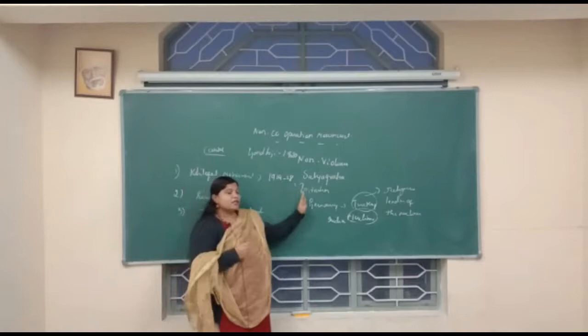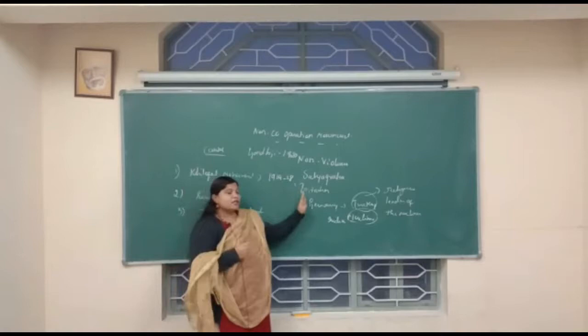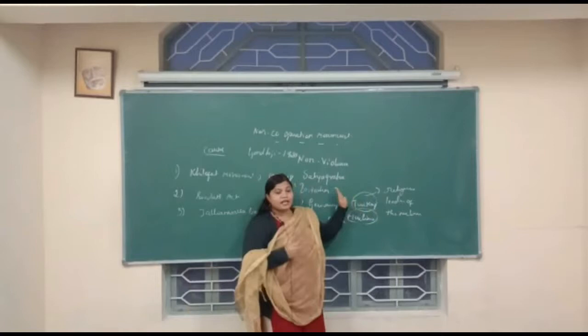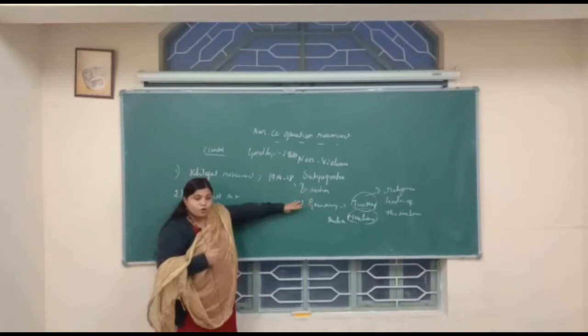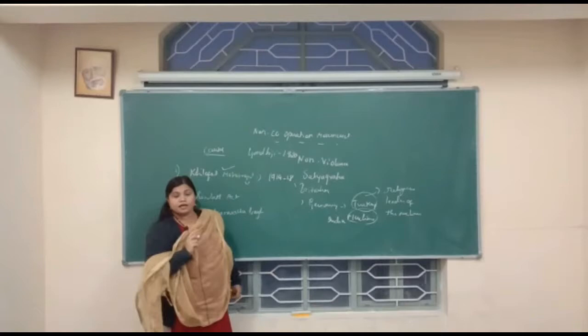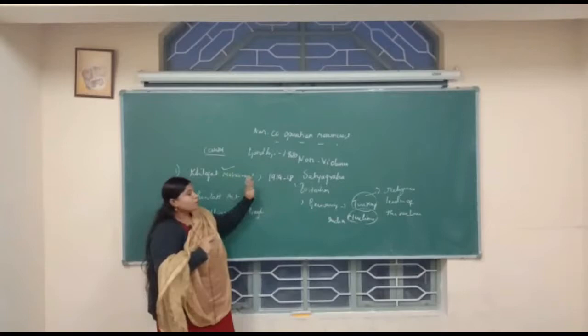Indian Muslims no longer wanted Britishers to rule over India. Before this, they had been loyal towards Britishers, but when they saw the Britishers imposing restrictions on the Turkey Sultan they understood the real nature of the Britishers. They decided they would go against the Britishers, not support them, and not be loyal to them. For that reason they wanted to launch a movement against Britishers, famously known as the Khilafat Movement.